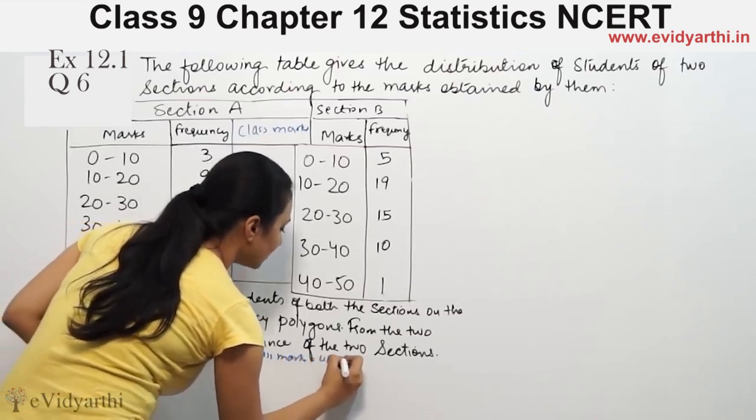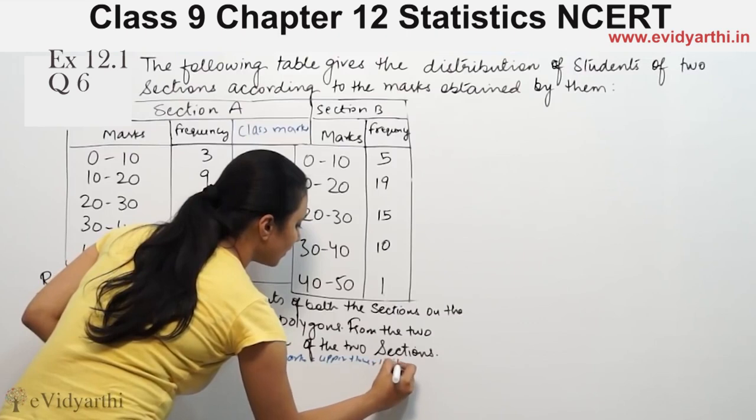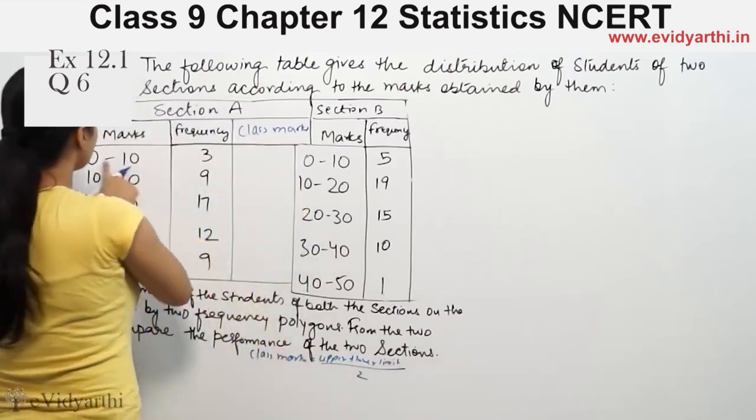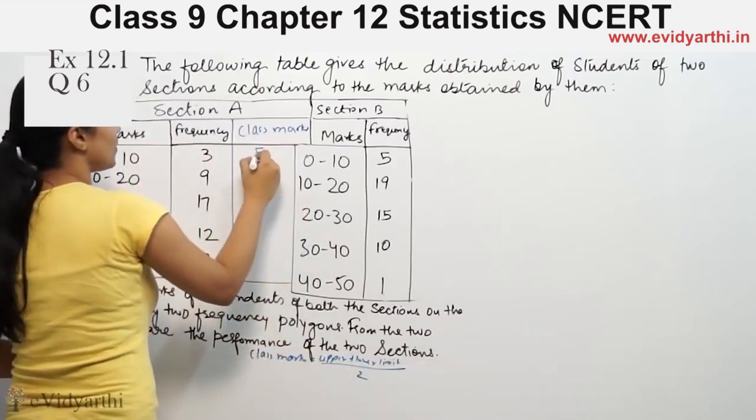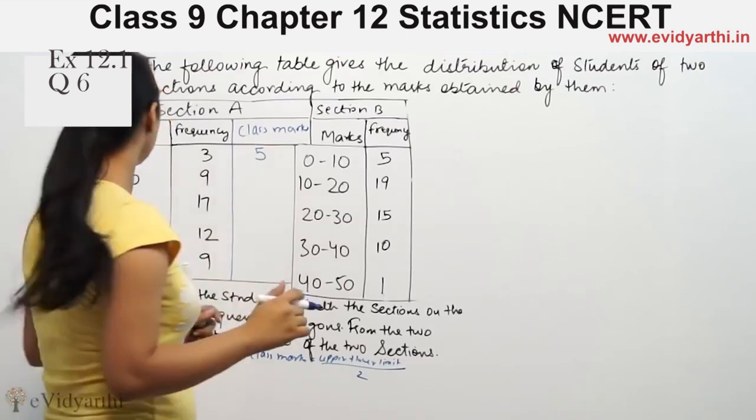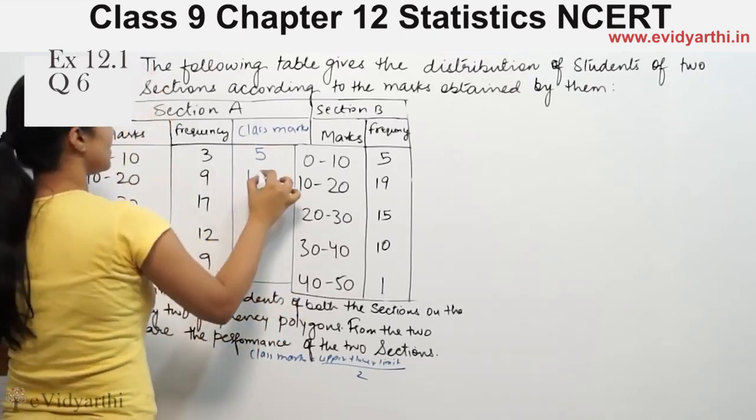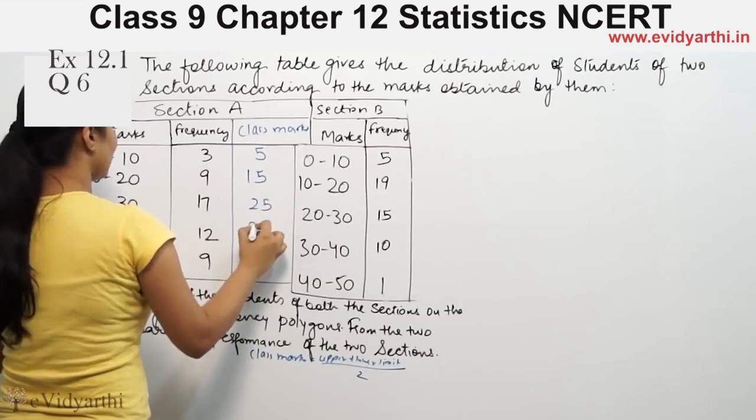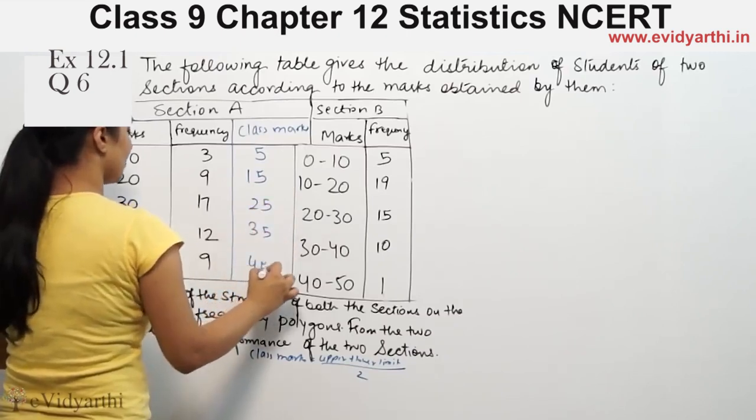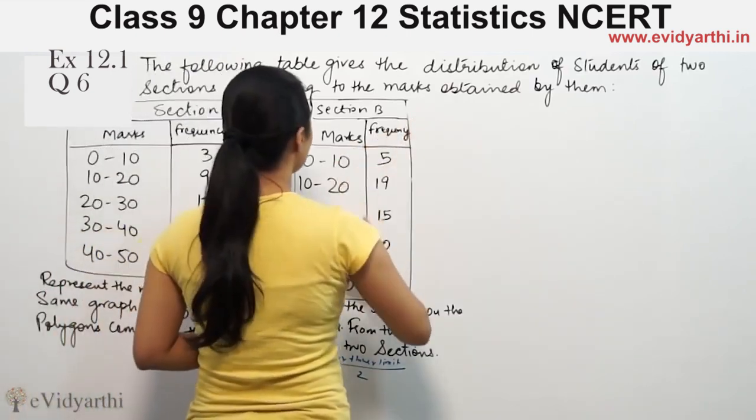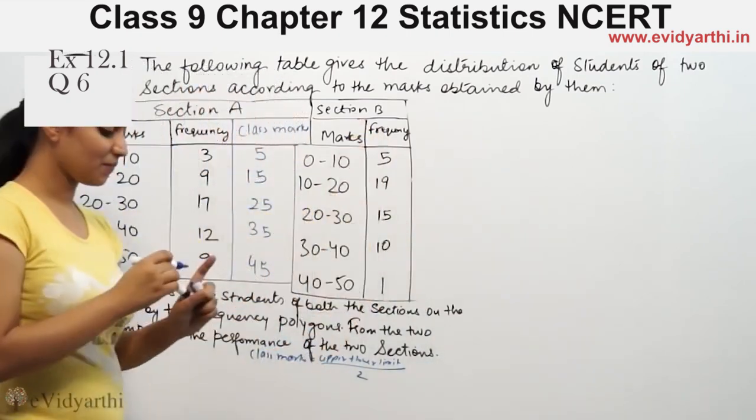So 0 plus 10 divided by 2 is 5. 10 plus 20 is 30, divided by 2 is 15. Then we have 25, 35, and 45.